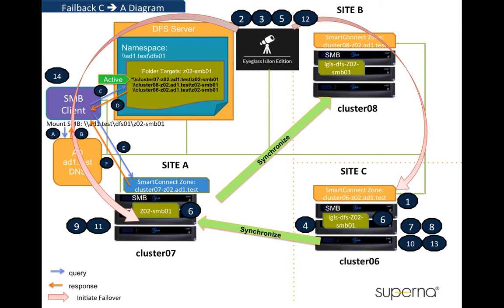The next diagram shows the DFS mode failback from C to A. During this failback, the SMB share name on cluster 06 is changed to the IGLS DFS prefix, and the SMB share name on cluster 07 is changed back to the actual share name. With these SMB share name changes, the DFS path to cluster 07 becomes the active path for the client to access after this failback.